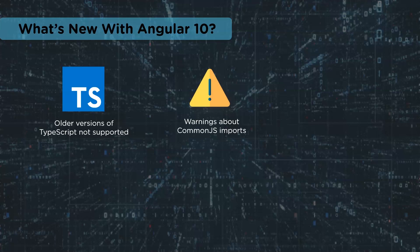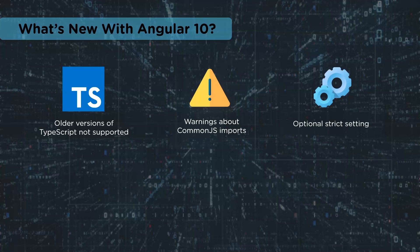Next up are warnings about CommonJS imports. Logging of unknown property bindings or elements, which were previously warnings, have now been increased to the error level. This change may have an effect on tools that are not expecting an error log. The most important update is that version 10 offers a new strict project setup when you create a new workspace with the ng new command.